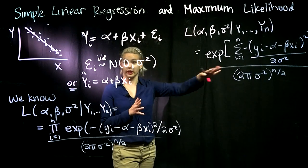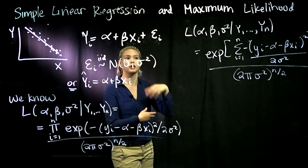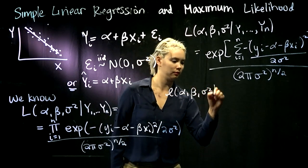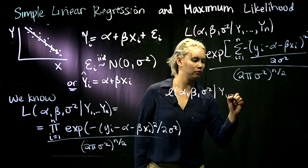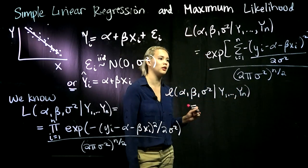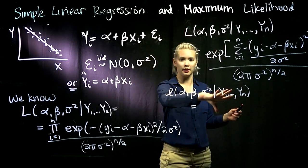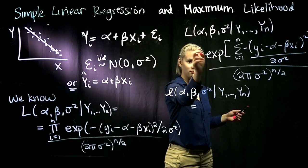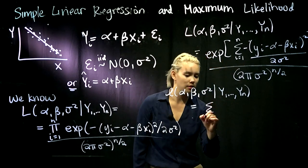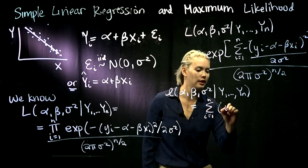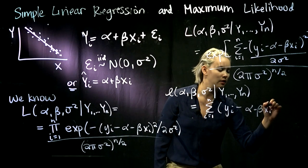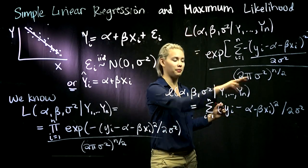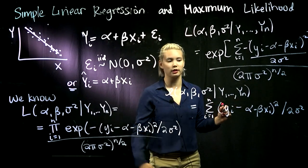Maybe if you're clever, you're already able to see how this ties to ordinary least squares, but I don't think it's that easy. So let's take the log of this likelihood to get the log likelihood. If we have log of something divided by something, that's log of the top thing minus log of the bottom thing. The log of the top thing is exp of something, so we end up with just the sum from i equals 1 to n of yi minus alpha minus beta xi squared divided by 2 sigma squared. And the log of the bottom thing is n over 2 times log of 2 pi sigma squared.